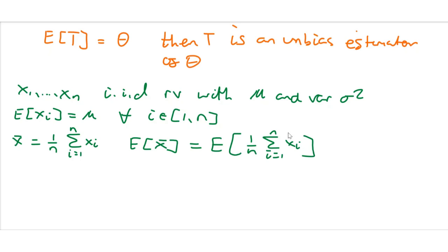You can take out constants out of an expectation of a random variable, and then also the linearity of expectations. The expectation of a sum is the sum of the individual expectations.